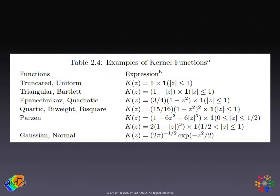Among the kernel types: uniform weights don't provide much distance decay, so they are less useful. Triangular weights are an extension of the Bartlett weights. Quadratic weights give a more rapid distance decay. Gaussian weights are also used quite often, but they don't have a strict bandwidth in the sense of kernel weights going to zero beyond a particular distance — instead, the bandwidth is a function of the variance or standard deviation of the Gaussian distribution.